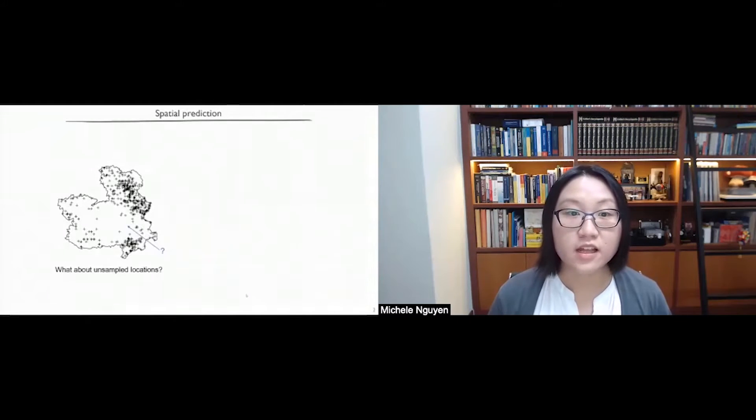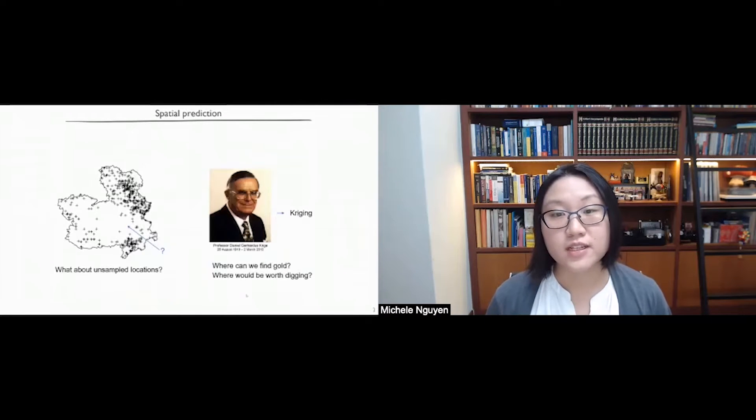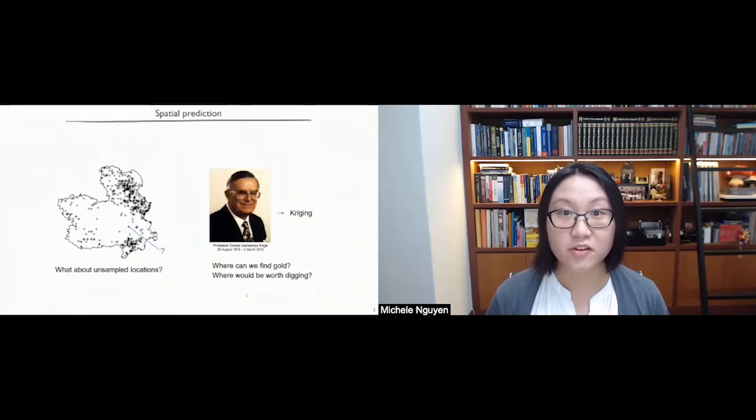Suppose that we have data collected over a study region, like those marked by the crosses on this map here. Then given our observations, how can we estimate what we might observe at an unsampled location? And this brings us to the area of spatial prediction. For today's talk, we'll follow one man's approach to this problem. And this man is Professor Daniel Krige. He was looking at this problem in the context of gold mining. And the method that he developed was eventually named after him, Kriging.